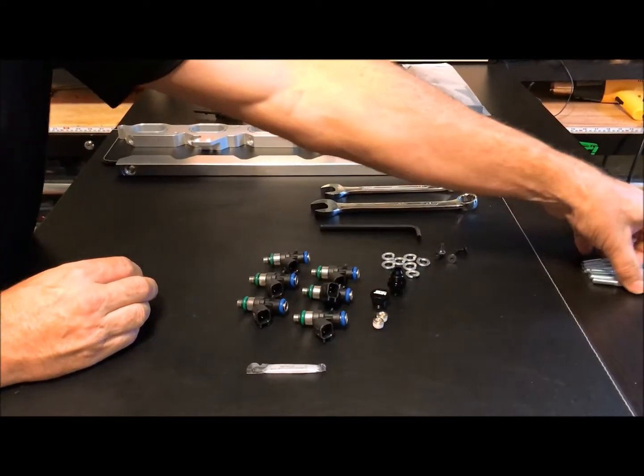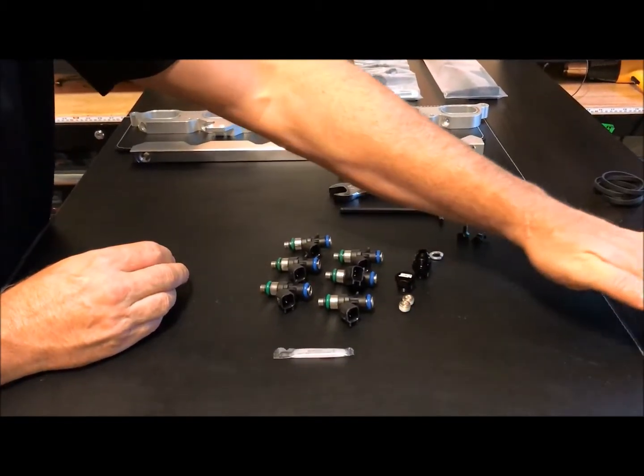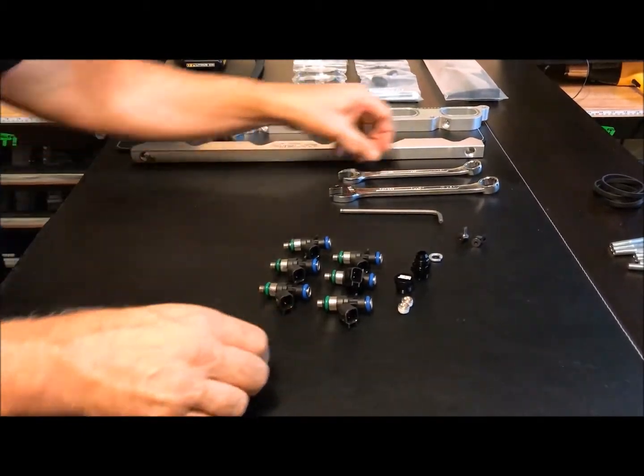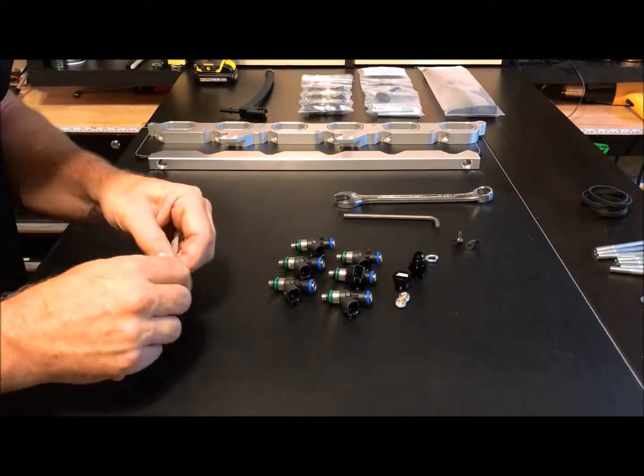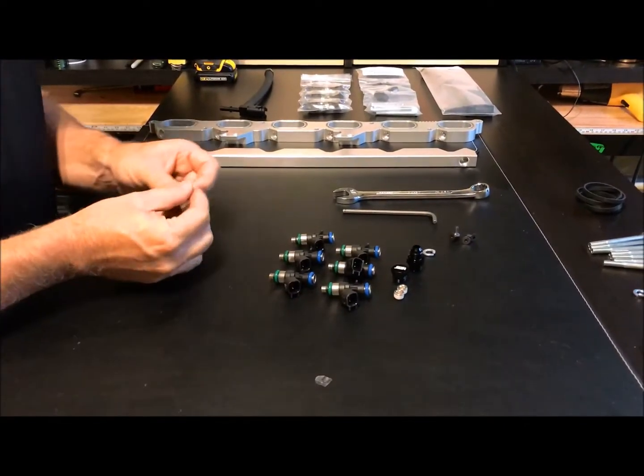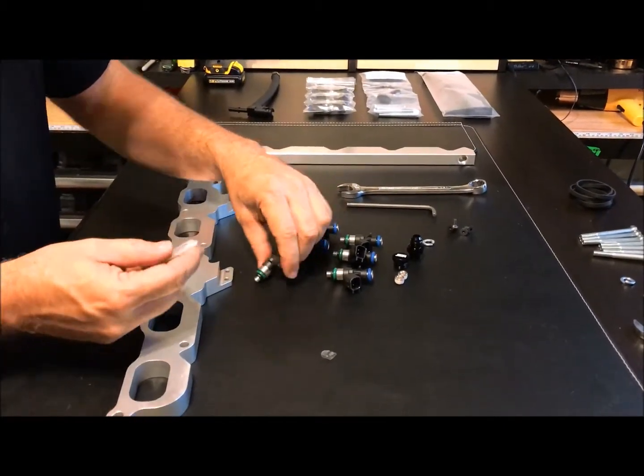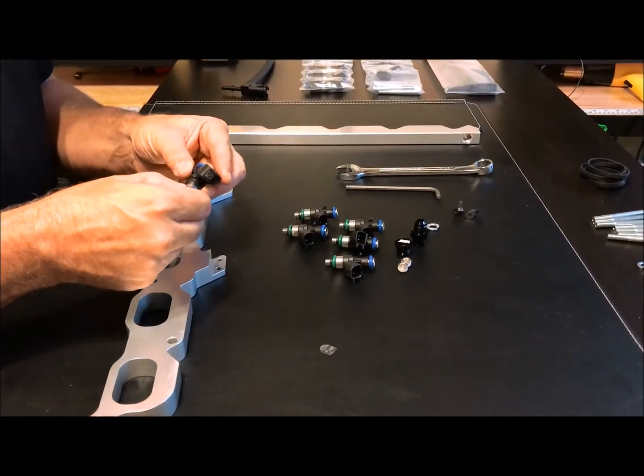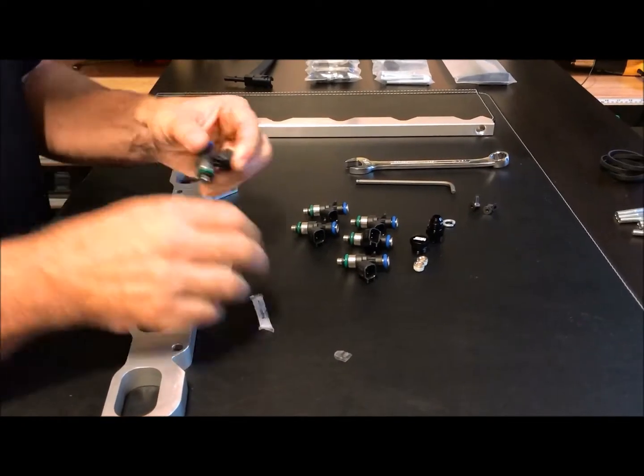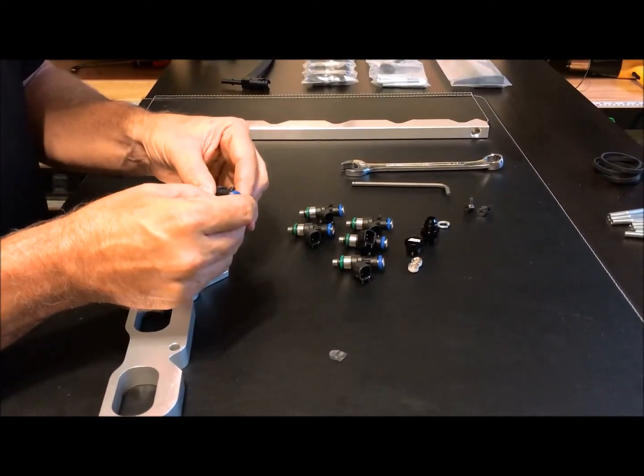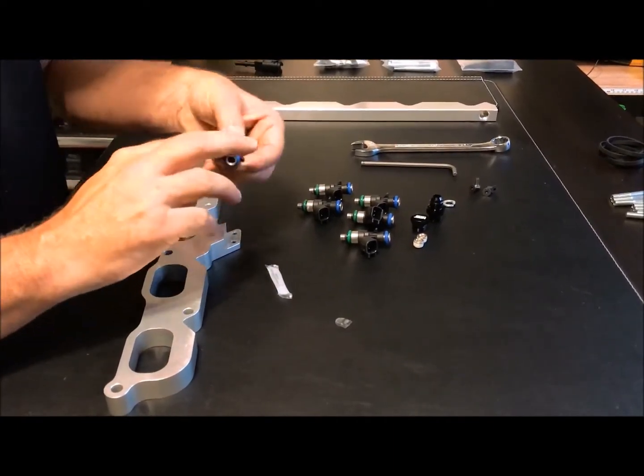So we'll go ahead and set aside the stuff that we're not going to really use right now and move on to the actual assembly. So the first thing that you're going to want to do is open up your silicone lube and liberally put some of the silicone lube on your O-rings for the injector. So let's just put a little on here, smear it around, make sure and put it on both sides.